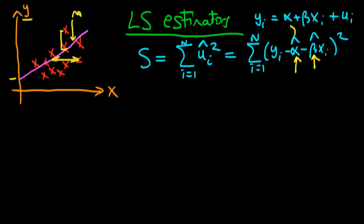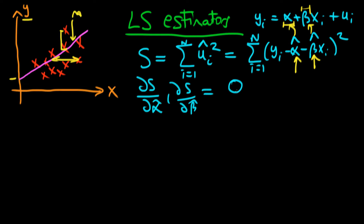α̂ is estimating α and β̂ is estimating β. There is some true population value of α and β, but because we only have a sample and don't know the population process, the best we can do is estimate them. The idea is that we differentiate S with respect to α̂ and β̂, set those two derivatives equal to zero, and then solve explicitly for the least squares estimators, which we denote α̂ and β̂.